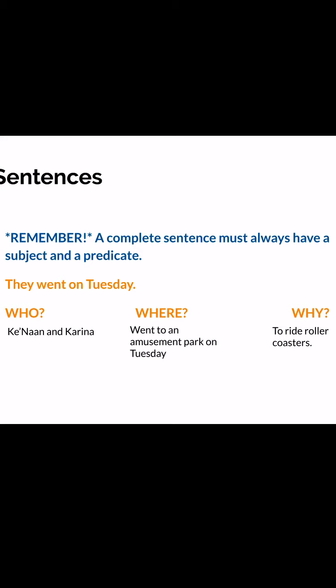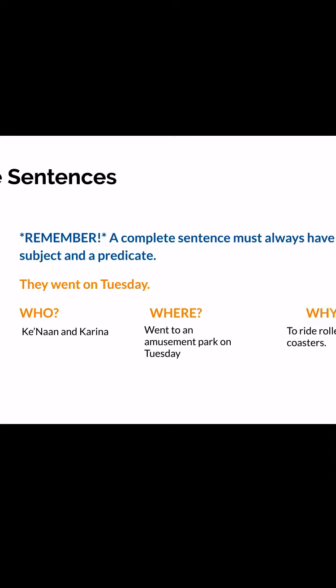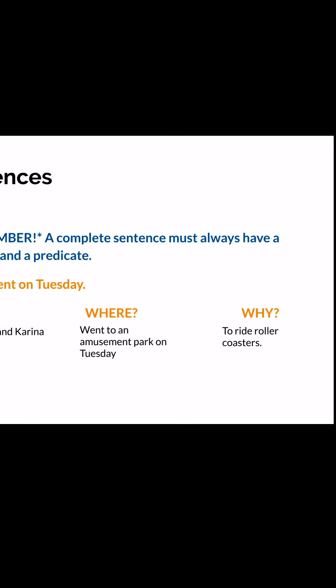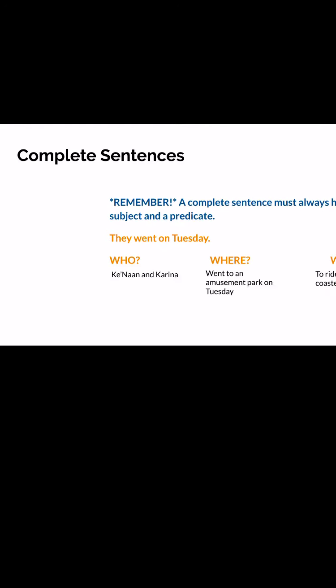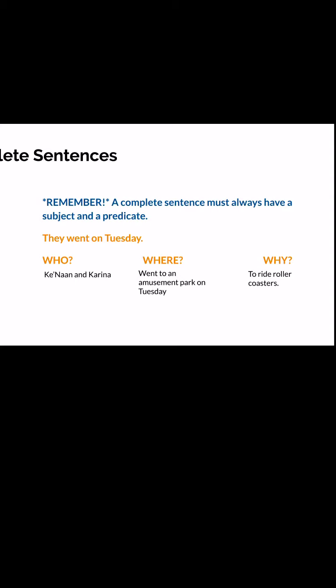Some things you could think about: who, where, and why. So 'who' — we can say 'Kenan and Karina.' 'Where' — 'went to an amusement park on Tuesday.' 'Why' — 'to ride roller coasters.' So your whole sentence can say: 'Kenan and Karina went to an amusement park on Tuesday to ride roller coasters.' You have a detailed sentence. If someone just said 'they went on Tuesday,' you'd be like, who, where, and why, right? To make a successful, complete sentence, you need details. Always include who — your subject — and always include where and why.